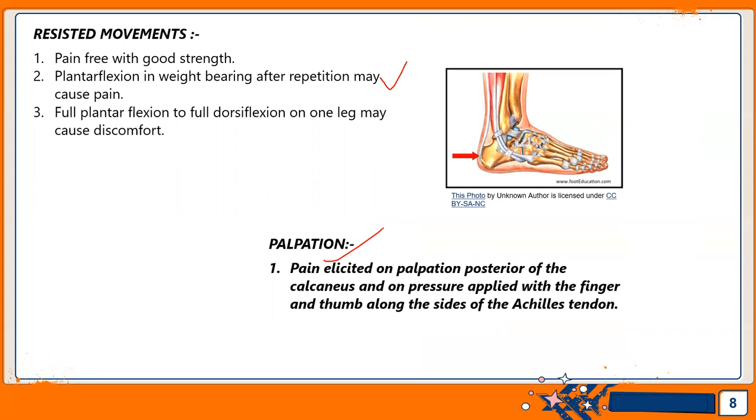Next is palpation. The patient should be in a relaxed position. Pain is elicited on palpation posterior to the calcaneus and on pressure applied with finger and thumb along the side of the calcaneus tendon. This palpation should be done gently, as any strong pressure applied in this way is uncomfortable. You shouldn't apply overpressure because the patient will feel uncomfortable. Even in normal subjects, there must be a noticeable difference between the amount of discomfort produced over the affected tendon compared to the unaffected side for the finding to be significant.